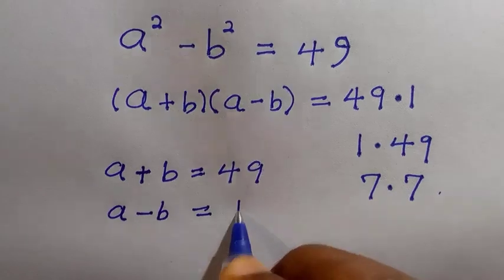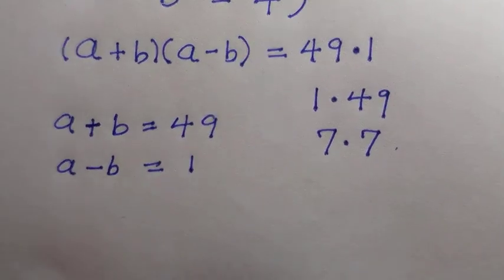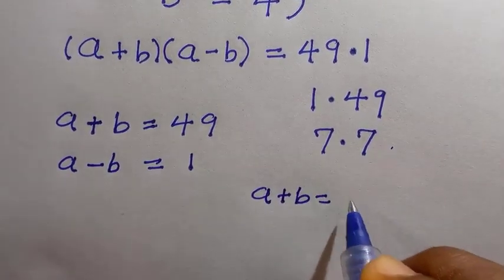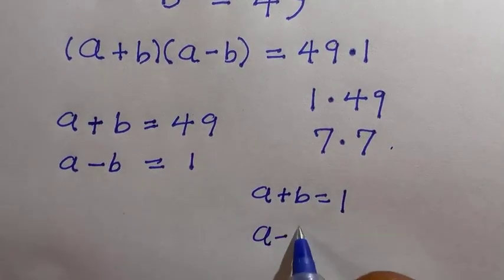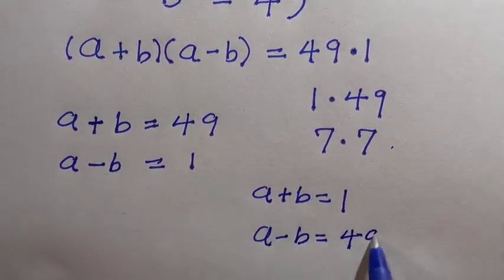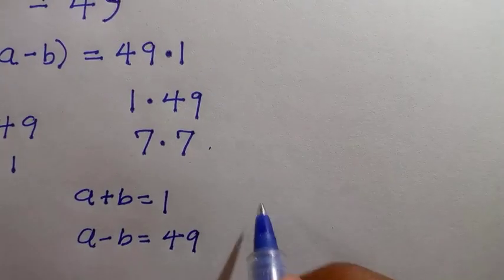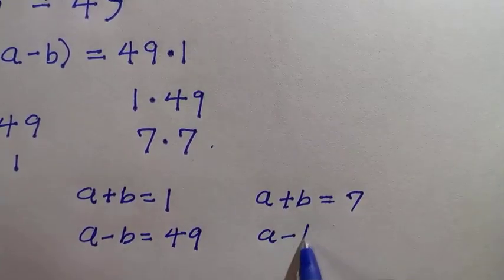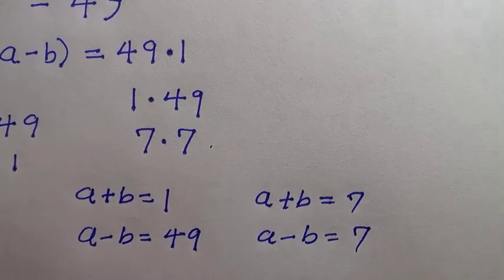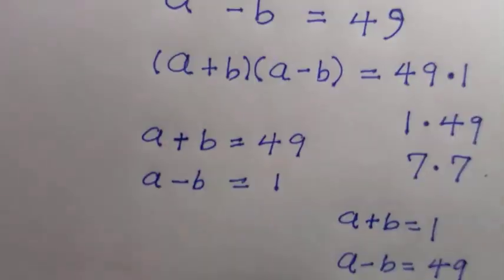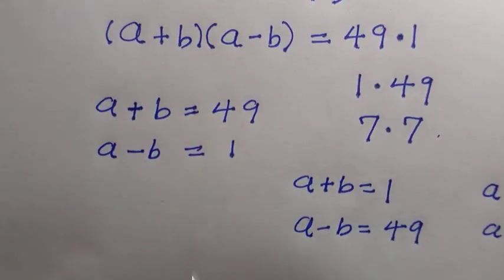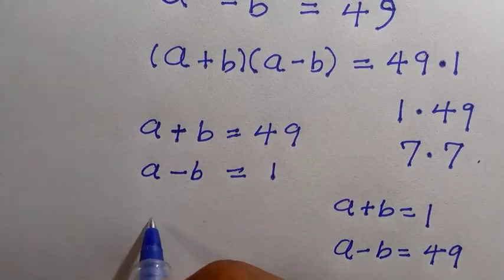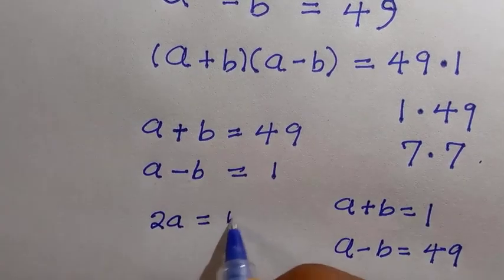So let's say we let a plus b equal to 49 and a minus b equal to 1. The second case is a plus b equals 7 and a minus b equals 7. Let's test all of these and see which ones satisfy the conditions stated above.